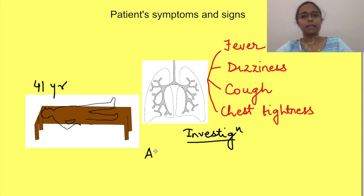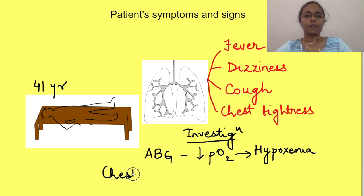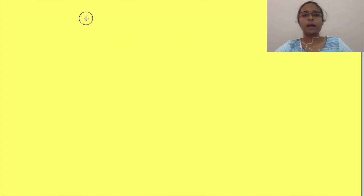The patient's arterial blood gas analysis revealed presence of decreased partial pressure of oxygen, i.e., hypoxemia, and chest radiographs with ground glass opacities in airspaces and CT scan were indicative of pneumonia.